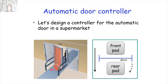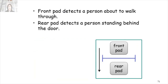The pads are sensors — we can sense if someone is standing there or not. The front pad detects a person about to walk through, while the rear pad detects a person standing behind the door. In that case we don't want to open the door. But we have four possible combinations of these cases.